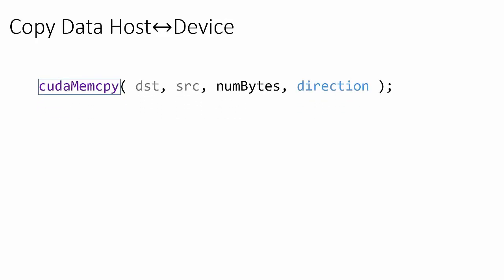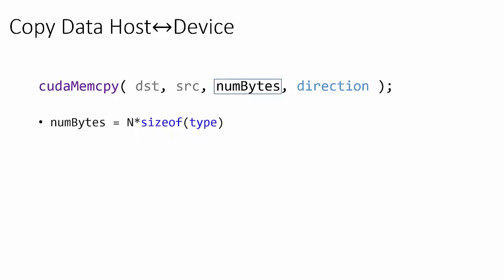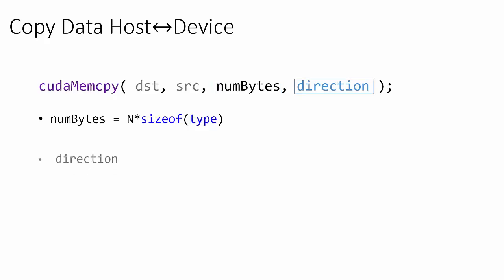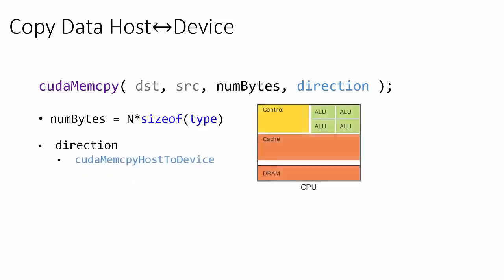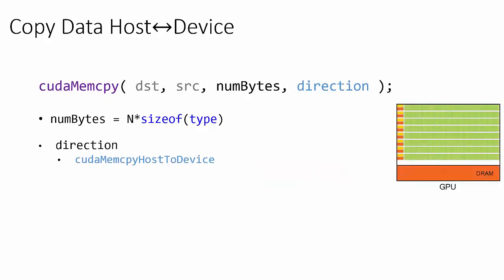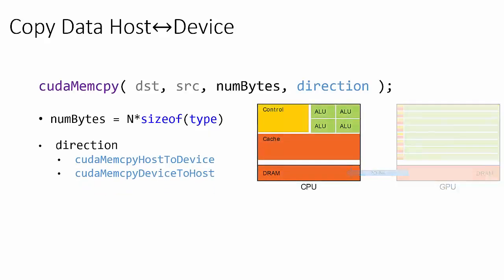To transfer data between the host and device, we use the function cudaMemcpy. cudaMemcpy takes four arguments. The first argument is a pointer to the address of the memory we are copying into. The third argument is the size of the data being transferred in bytes. The fourth argument is the direction of the transfer. If transferring from host to device, we set the direction to cudaMemcpyHostToDevice. If transferring from device to host, we set it to cudaMemcpyDeviceToHost.